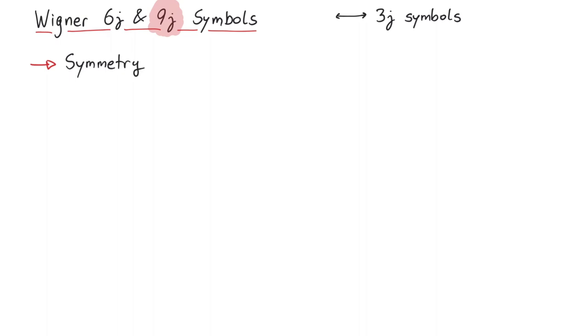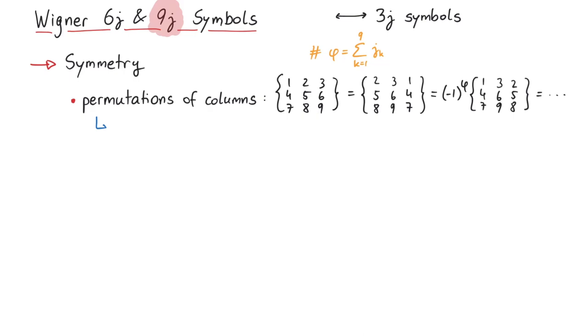And why would we do this? Again, the answer is symmetry. You can perform 72 symmetry operations on this 9j symbol, and the value won't change. Let's go through them. First, permutations of columns leave it invariant, where we have to include a phase factor for odd permutations. That's six operations.